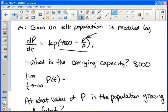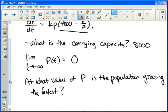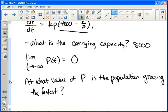Then they ask for the limit as t approaches negative infinity. Well, that would be 0. And then at what value of p is the population growing the fastest? Or they could ask, where would the point of inflection be? And that would be at p equals 4,000. Because that's half the carrying capacity. So if you know these facts about logistic, you should be golden as far as that's concerned.